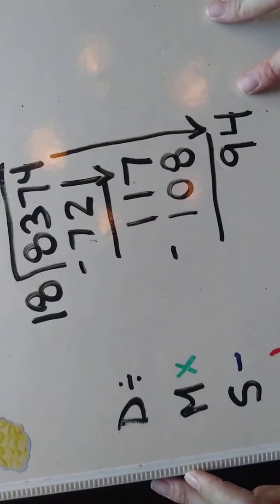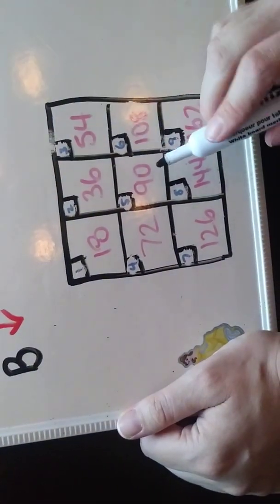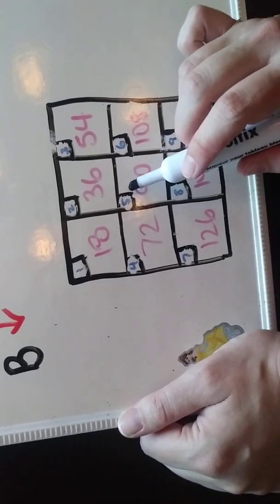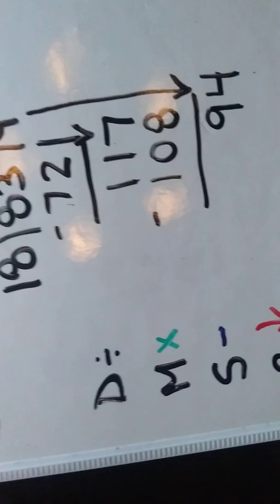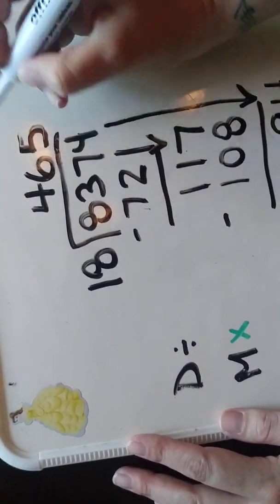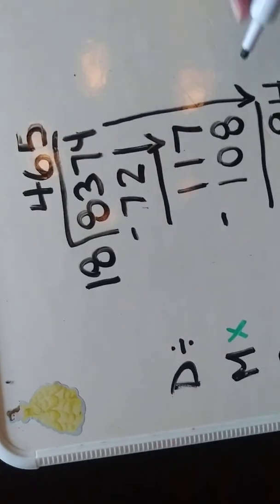How many times does 18 go into 94? Using the table again. There's 90. So I know that's going to go in at least 5 times. Coming back up again. 18 times 5. 18 times 5 is 90.